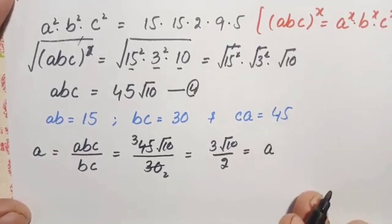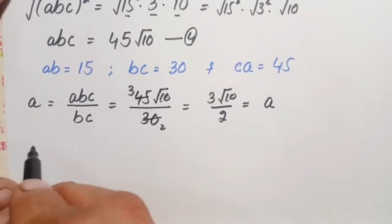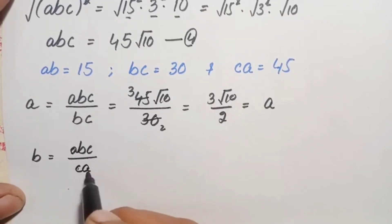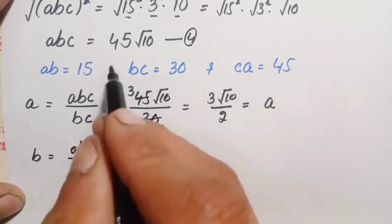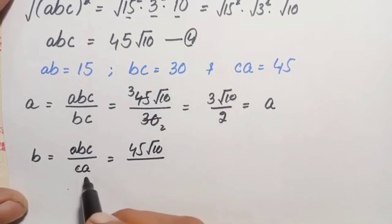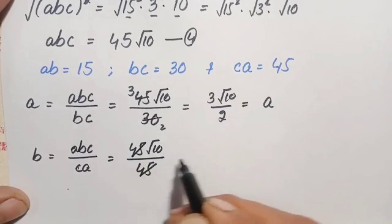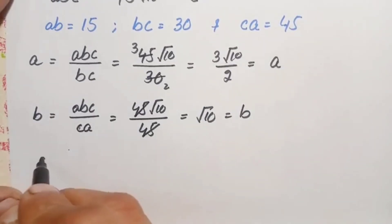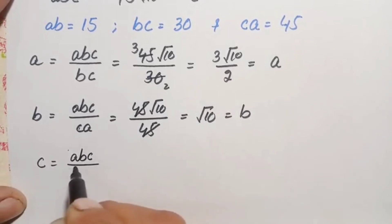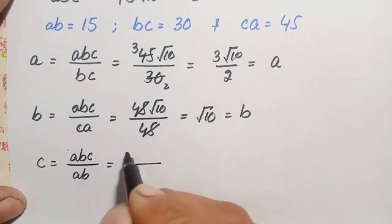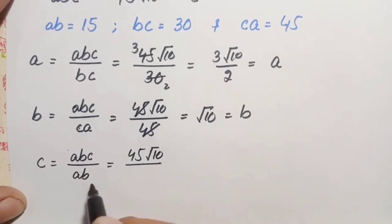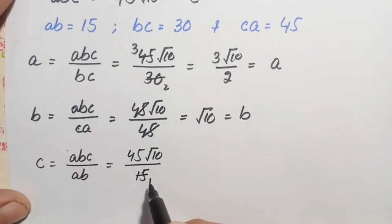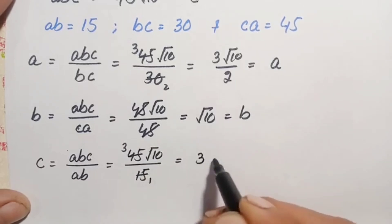To find b, we write b = (abc) / (ca). Substituting abc = 45√10 and ca = 45, the 45s cancel, giving b = √10. To find c, we write c = (abc) / (ab). Substituting abc = 45√10 and ab = 15, we simplify: 45 divided by 15 is 3, so c = 3√10.